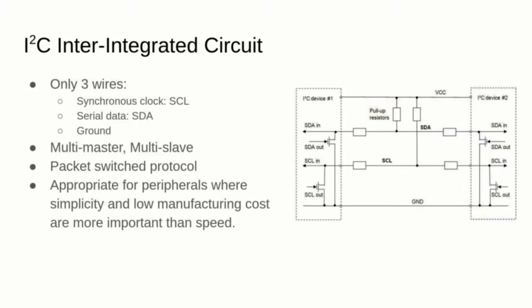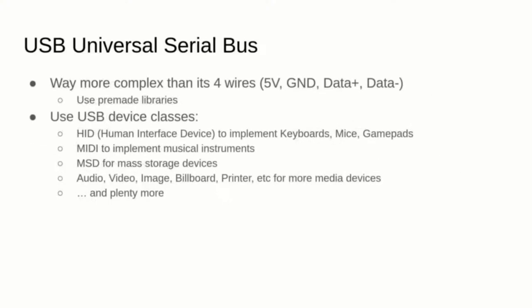Another popular microcontroller protocol is the Inter-Integrated Circuit, abbreviated I2C. It uses two wires and supports multi-master, multi-slave configurations, but implements a packet-switched protocol which is rather computationally heavy. A different protocol that can be implemented inside a microcontroller is the Universal Serial Bus (USB). USB has many device classes you can import to implement keyboards, mice, joysticks, MIDI controllers, mass storage devices, and more. Some microcontrollers offer a USB port; if they don't, you can cut a USB cable and connect its four wires — VCC, ground, and two digital pins.